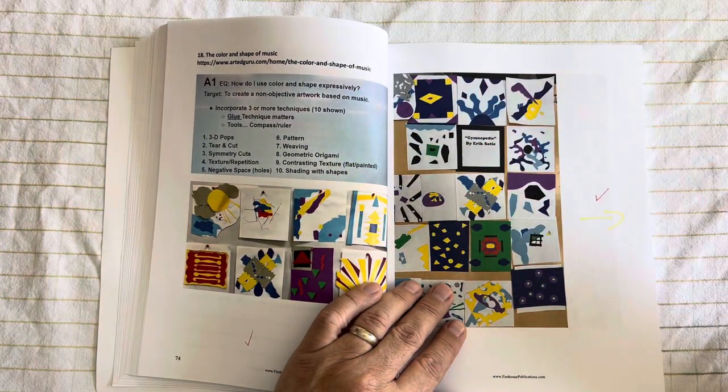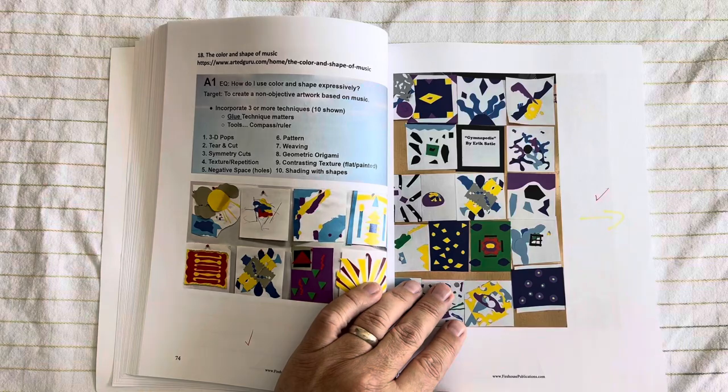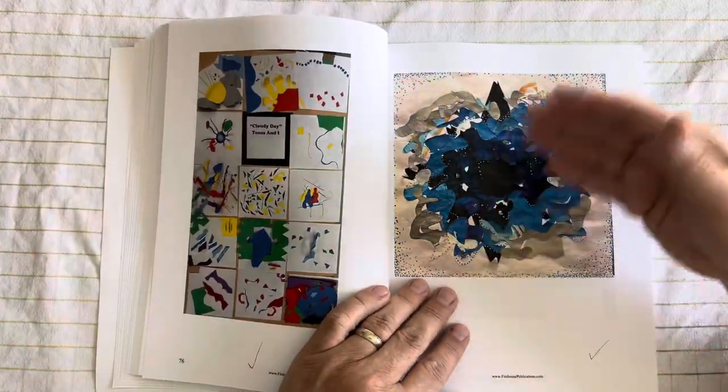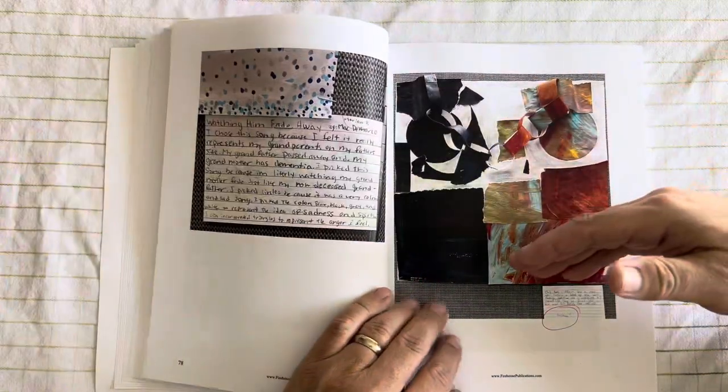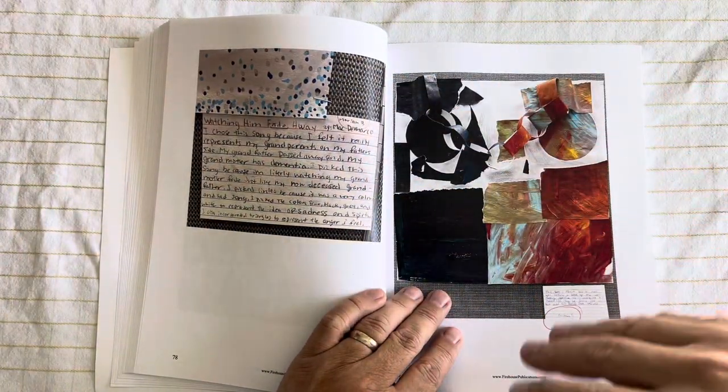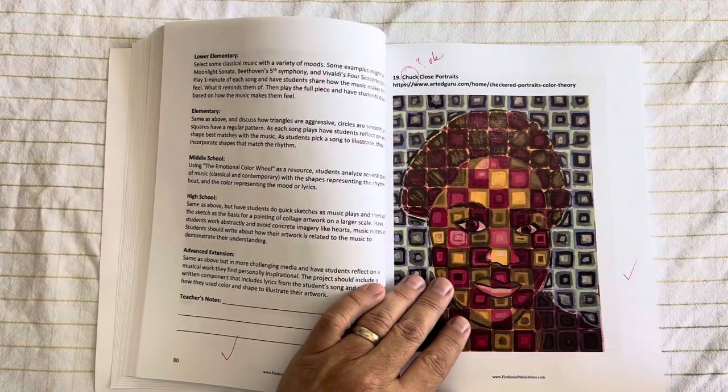Then, along with music, looking at it as abstract expressionism and how you could use color and shape to represent music. And they can create these wonderful abstract works of art. And then we always tie in literacy with all of the lessons. So there's going to be a writing component that you can use if you'd like to.